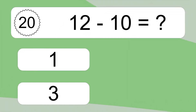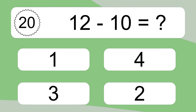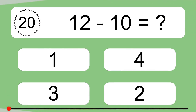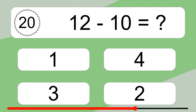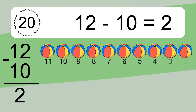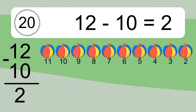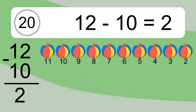Twelve minus ten equals what? Twelve minus ten equals two. Let's count it: eleven, ten, nine, eight, seven, six, five, four, three, two.